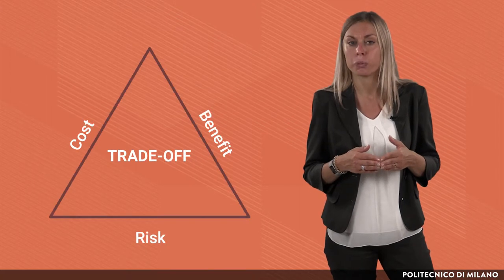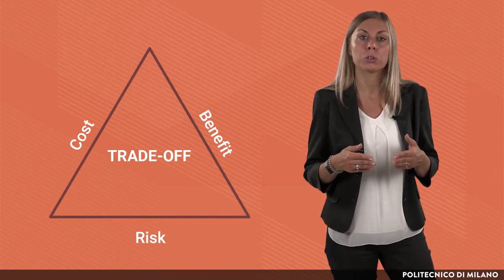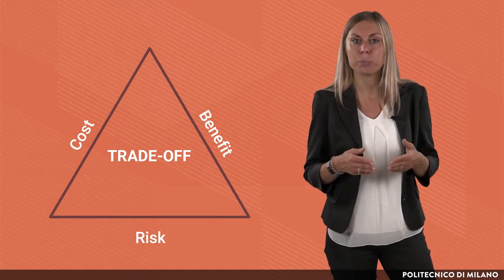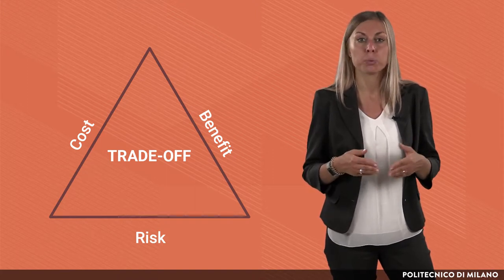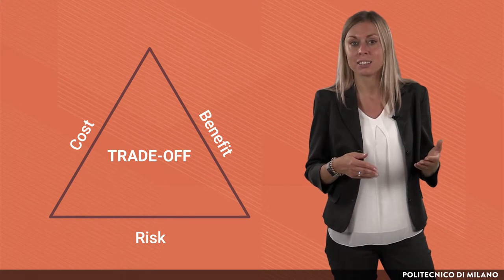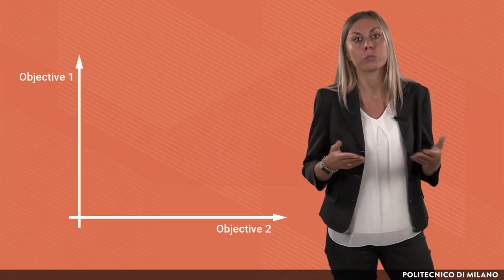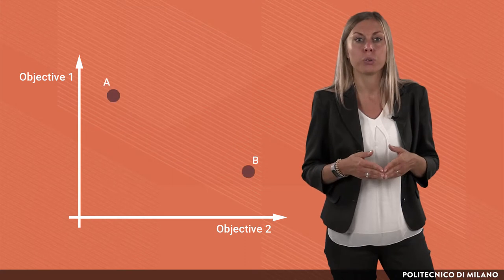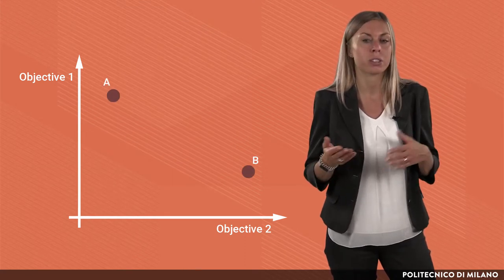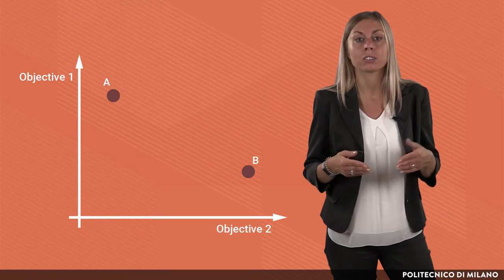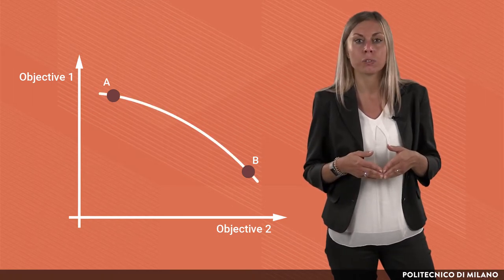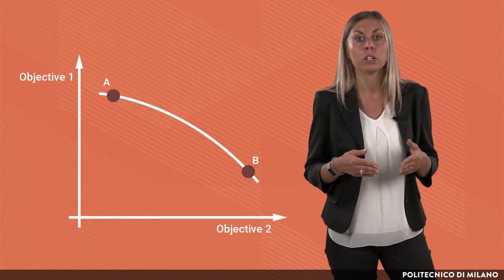A key aspect in the identification of the main goals pertains to the concept of trade-off. A trade-off occurs when more goals are pursued and it is impossible to optimize both goals. The improvement of a goal entails necessarily the reduction of the other goal. For example, imagine having one choice with two different alternatives and two different objectives to pursue. If you improve objective 1, objective 2 decreases and vice versa. This creates a trade-off curve and the decision-maker should identify in which point of the curve to position the choice.